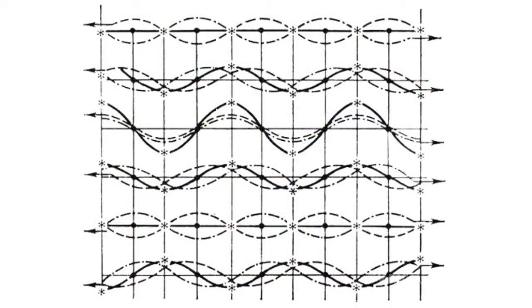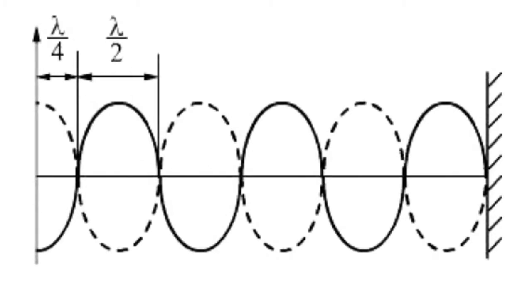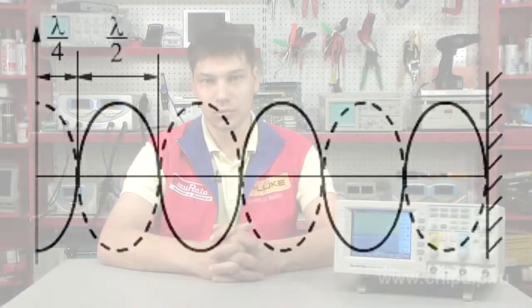We observe a very important case of interference when two counter-running plane waves of the same amplitude superpose. The resulting oscillatory process is called a standing wave. In practice, standing waves occur when waves are reflected from barriers. The wave which falls on the barrier and the oncoming reflected wave superpose, thus forming a standing wave.